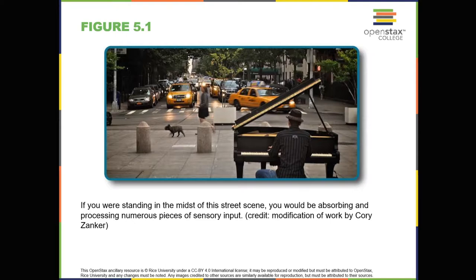We rely on our sensory systems to provide important information about our surroundings. We use this information to successfully navigate and interact with our environment so that we can find nourishment, seek shelter, maintain social relationships, and avoid potentially dangerous situations.